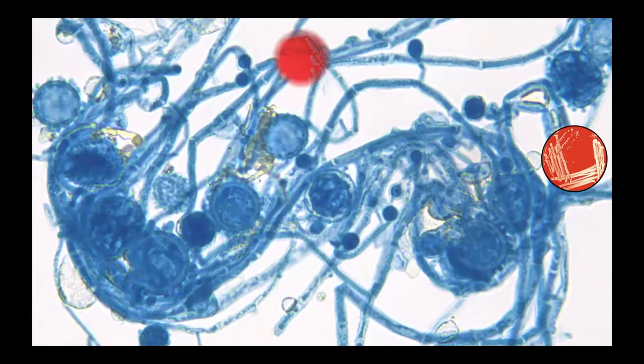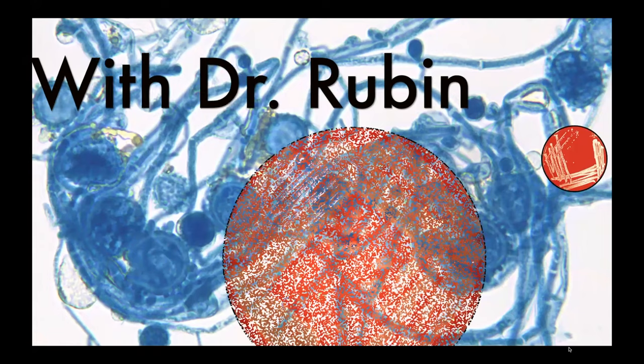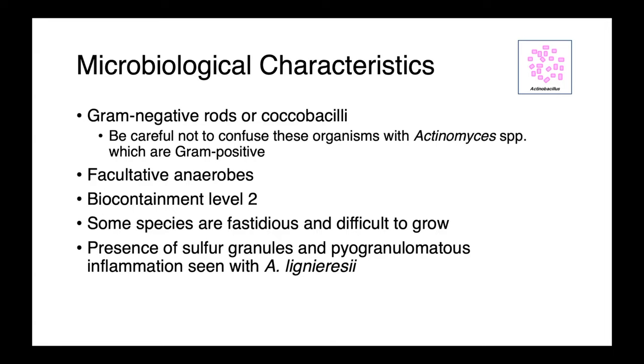Today we're talking about an important group of veterinary pathogens in the genus Actinobacillus, ranging from pneumonia in pigs to pyogranulomatous infections of the bovine tongue. Actinobacillus is a genus of gram-negative bacteria — be careful not to confuse these with Actinomyces, a gram-positive genus. These organisms are rods or coccobacilli and are often pleomorphic. They're facultative anaerobes and are all considered biocontainment level 2. Some species are fastidious and can be somewhat difficult to grow, although there are classic hallmarks seen cytologically or histologically, such as sulfur granules and characteristic pyogranulomatous inflammation.